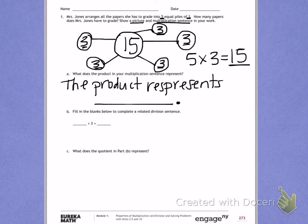Letter B. Fill in the blanks below to complete a related division sentence. When I'm dividing, I always start with my largest number. So when 5 times 3 equals 15, 15 is my largest number. I have 15 divided by 3. That's my size, which equals 5, my groups.